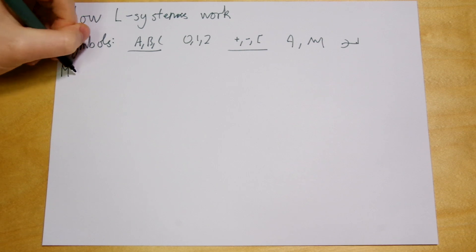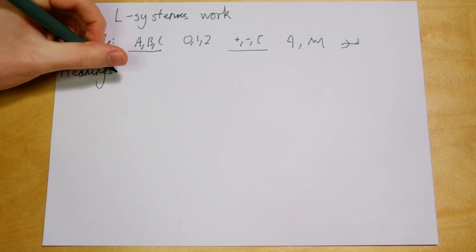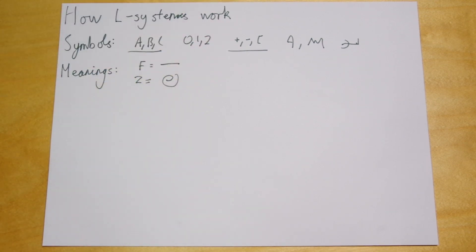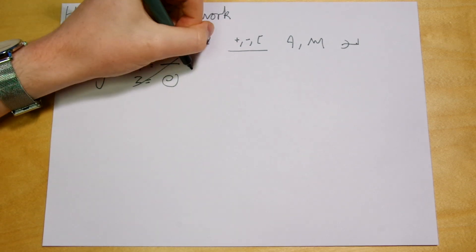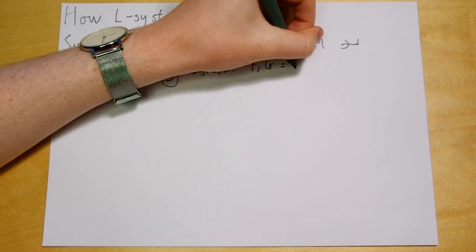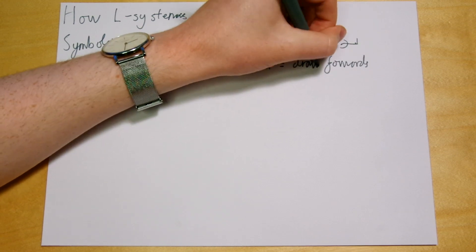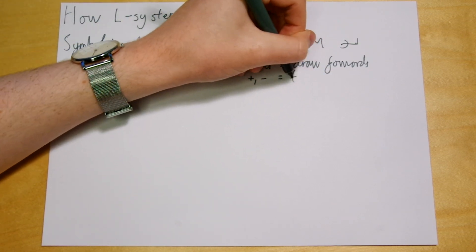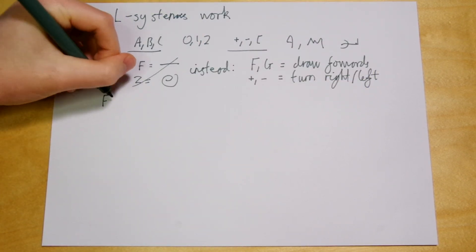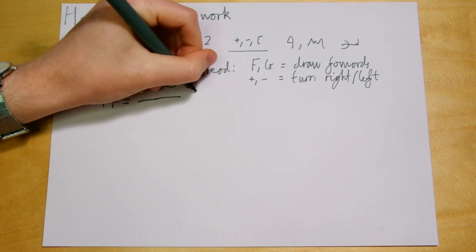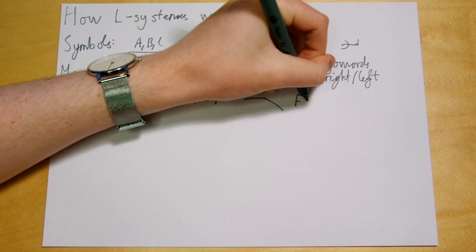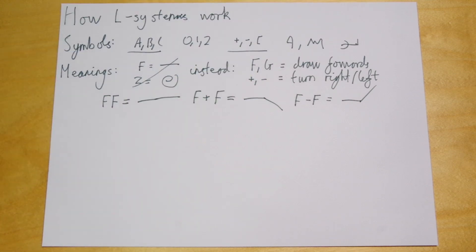So if we want to draw things, we'll have to give the symbols some meaning. This can be whatever you like. Maybe F means to draw a horizontal line and Z means to draw a nice spiral. But to keep things simple, we'll use just a couple of symbols with some basic meanings. So both F and G mean to draw forwards, and plus and minus mean to turn right and left respectively by some angle, and we'll choose 60 degrees for now. You'll notice that a string of symbols means to draw them one after the other without lifting the pen from the paper.